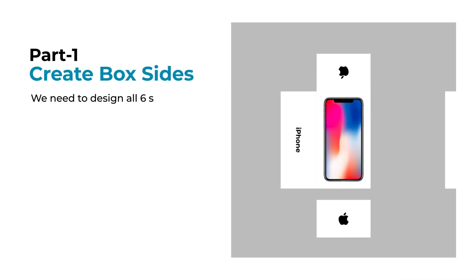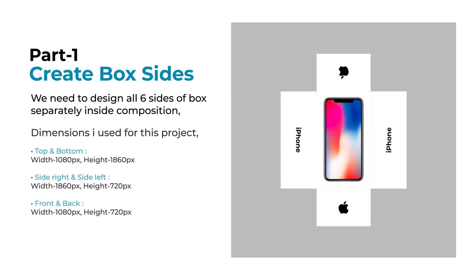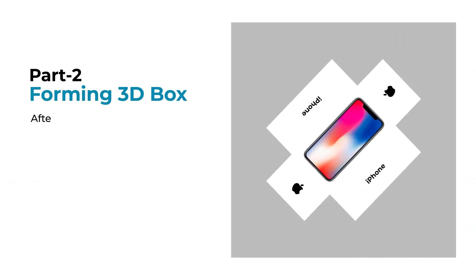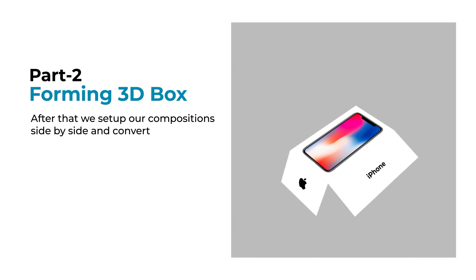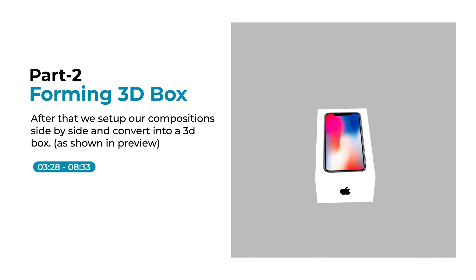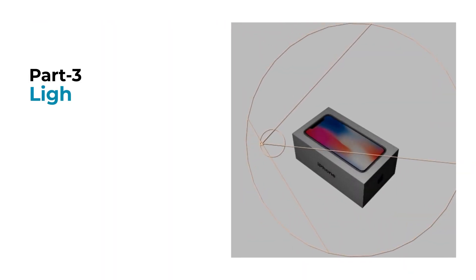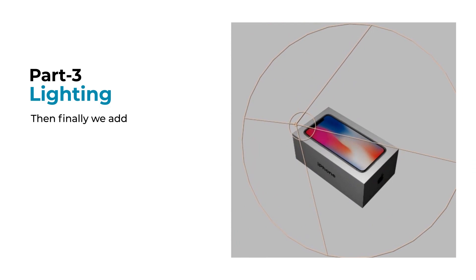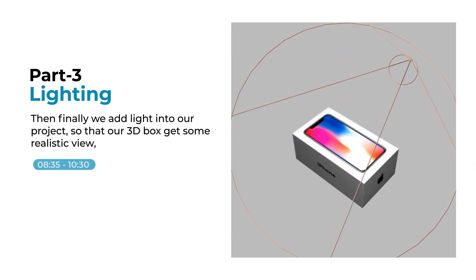Part 1: Create box sides. We need to design all 6 sides of the box separately inside a composition. Part 2: Forming 3D box. After that we set up our compositions side by side and convert into a 3D box. Part 3: Lighting. Then finally we add light into our project so that our 3D box gets a realistic view.